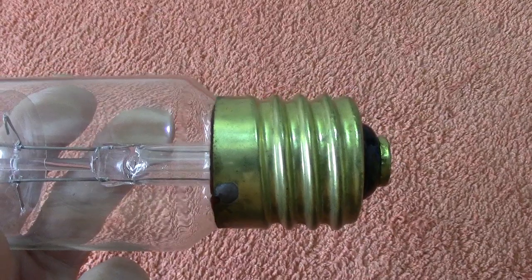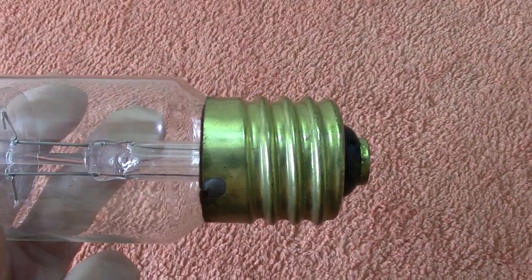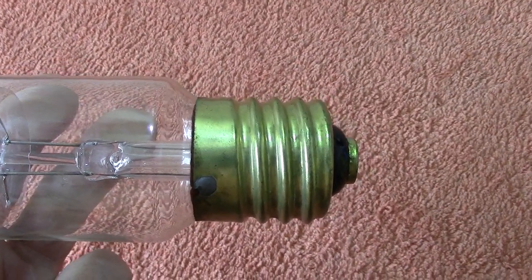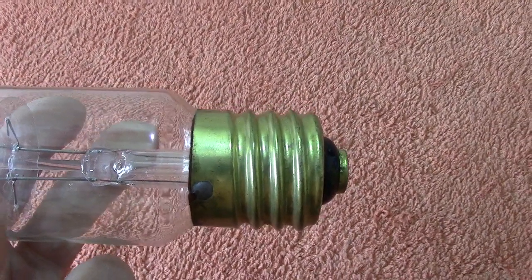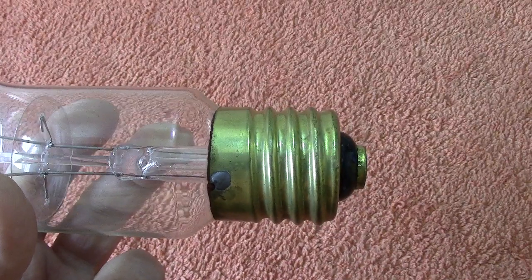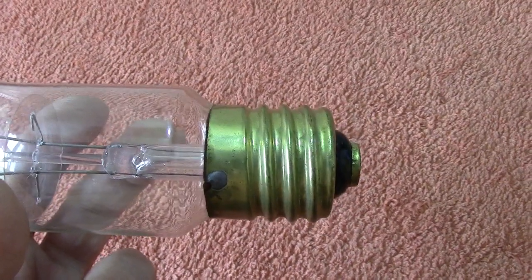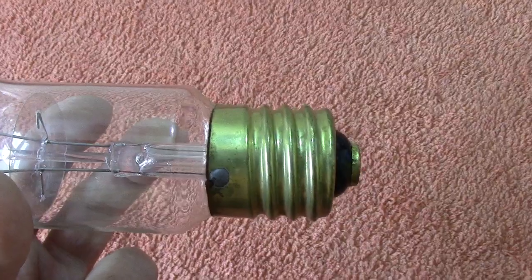Now this lamp we show here is a GES, a Goliath Edison screw. It's virtually the same size as the American Mogul. There is a slight difference. They will fit each other's lamp holders.